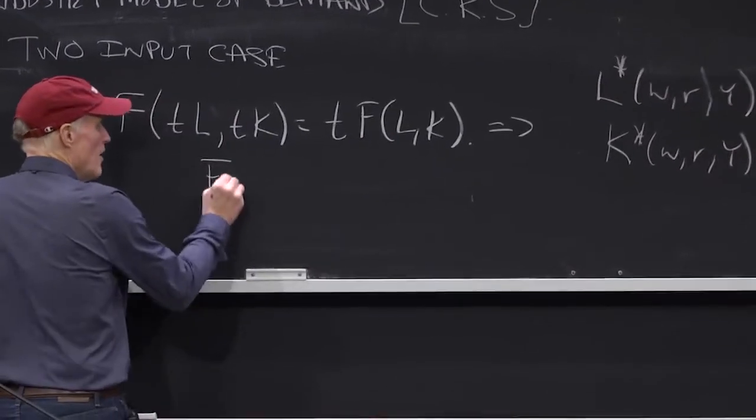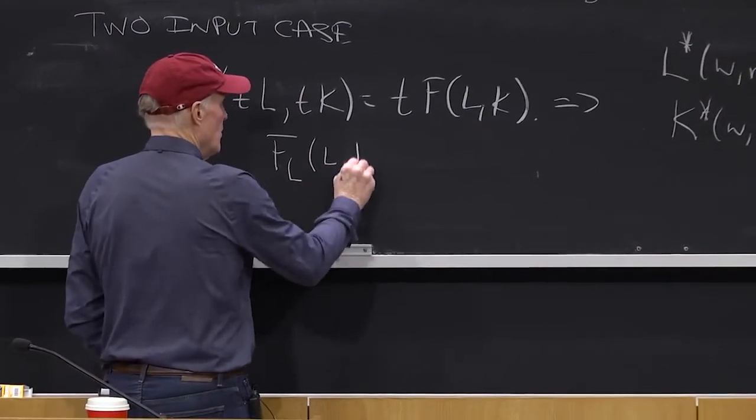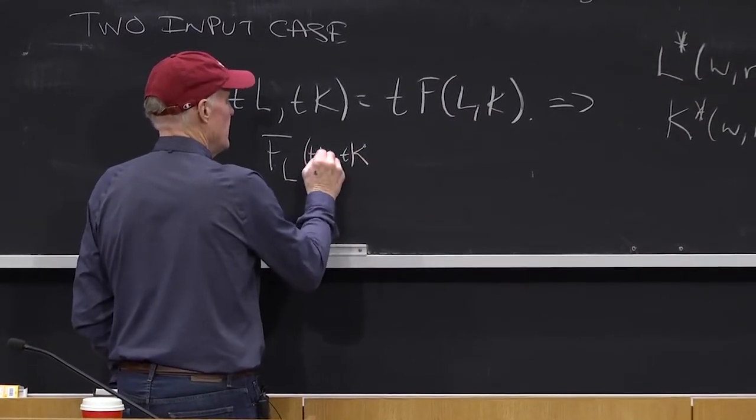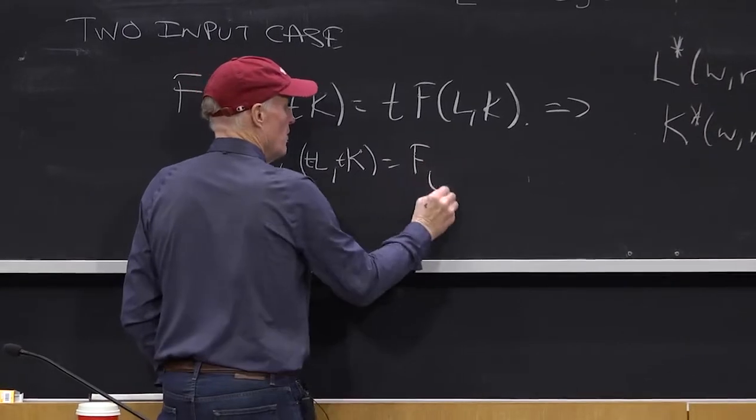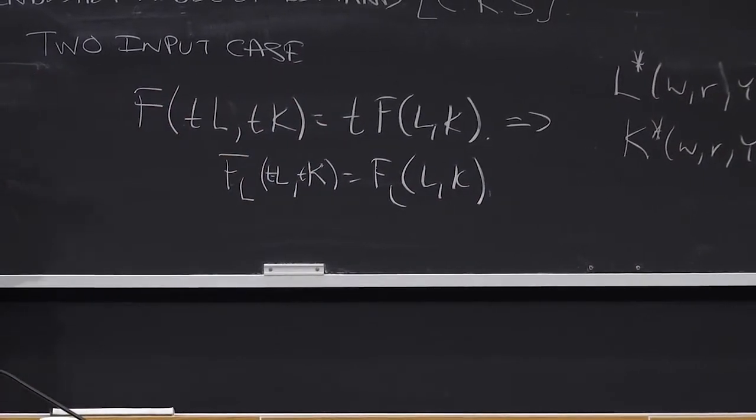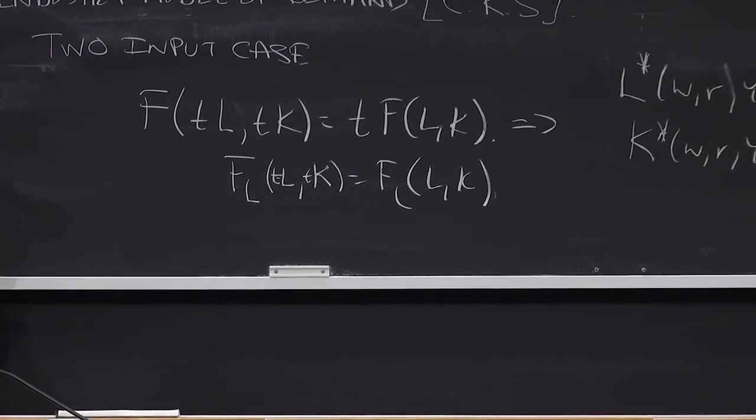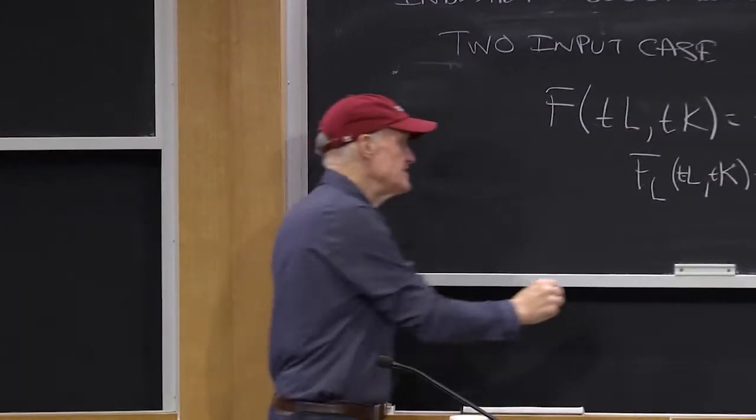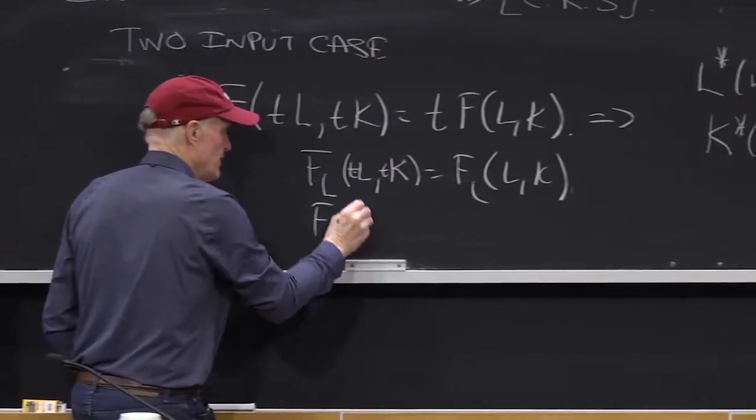So F_L of tL, tK equals F_L of L and K. Right? That is, the marginal product of labor is the same as I move out along a ray. And same is true for the marginal product of capital.